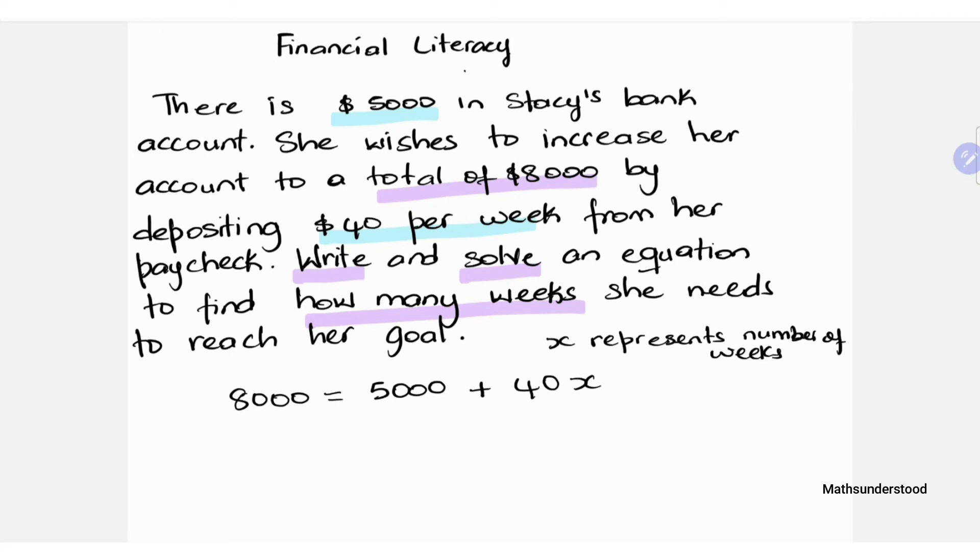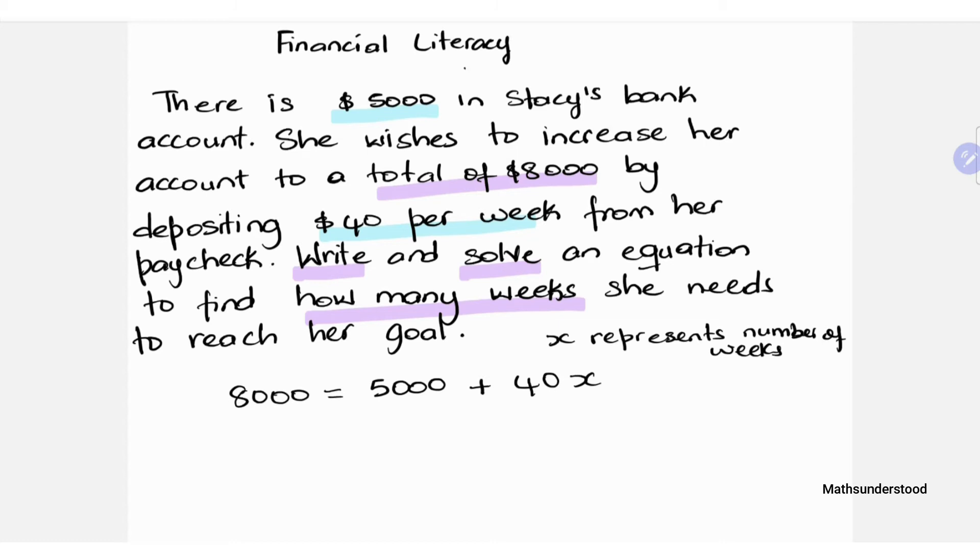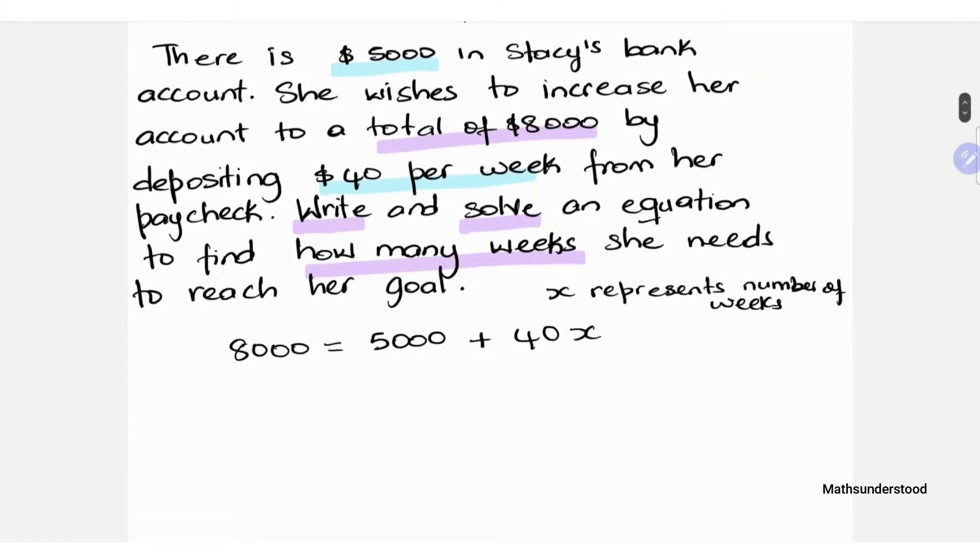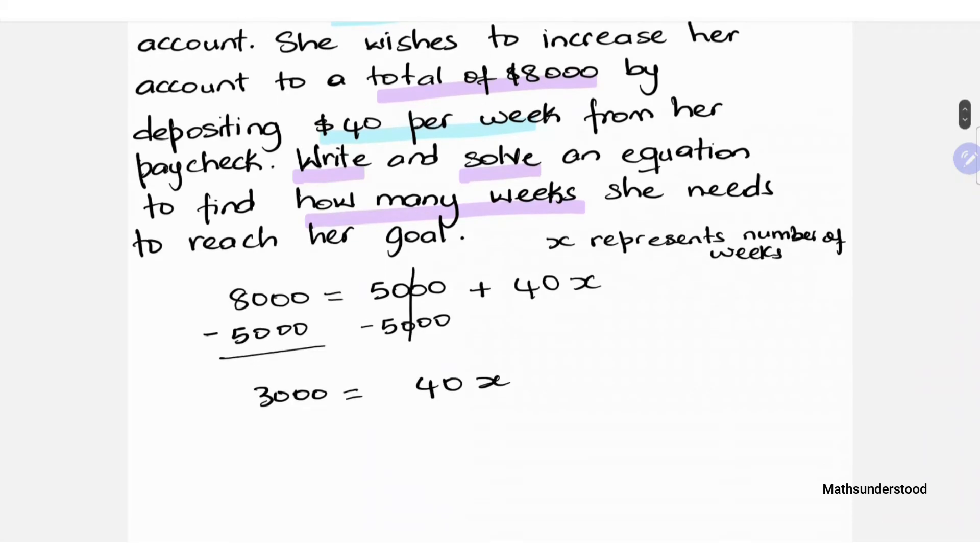Right, so now that we have our equation set up, we may go ahead and solve for X. So the first thing we're doing here in solving for X is to subtract 5,000 from both sides of the equation. Once we've done that, we're left with 3,000 being equal to 40X.